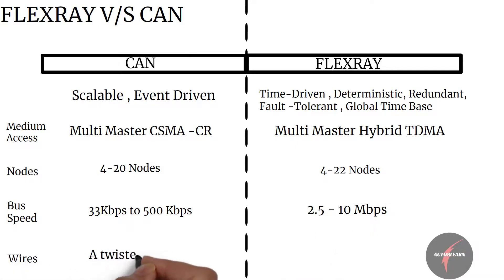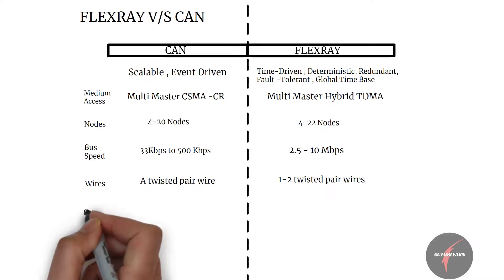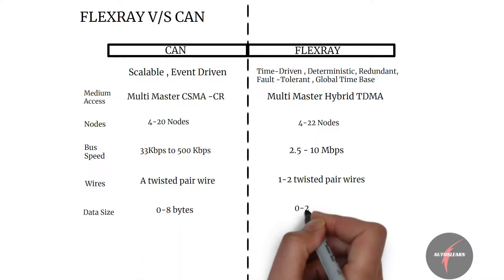Looking into wires, CAN has a twisted pair wire while FlexRay can support 1 to 2 twisted pair wires. With respect to data and frame size, CAN supports 0 to 8 bytes payload while FlexRay supports 0 to 254 bytes payload.